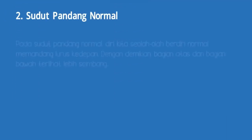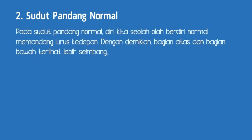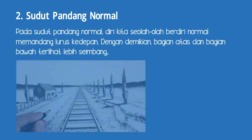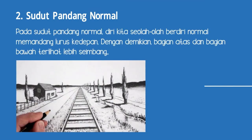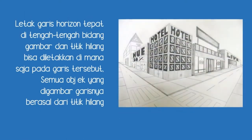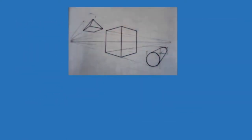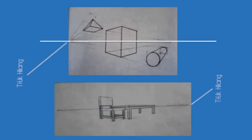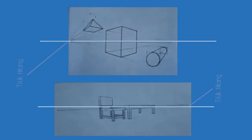Kedua, sudut pandang normal. Pada sudut pandang normal, diri kita seolah-olah berdiri normal memandang lurus ke depan. Dengan demikian, bagian atas dan bagian bawah terlihat lebih seimbang. Letak garis horizon tepat di tengah-tengah bidang gambar, dan titik hilang bisa diletakkan di mana saja pada garis tersebut. Semua objek yang digambar, garisnya berasal dari titik hilang.